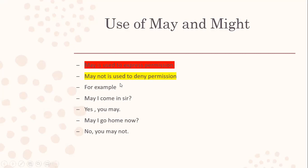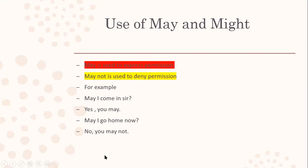May is used to express permission. When you're asking permission from somebody, we use 'may.' May not is used to deny permission — when permission is not allowed, it's denied. For example: 'May I come in, sir?' — 'Yes, you may.' That indicates permission given positively. When we say 'May I go home now?' — 'No, you may not.' May not is used to deny permission.